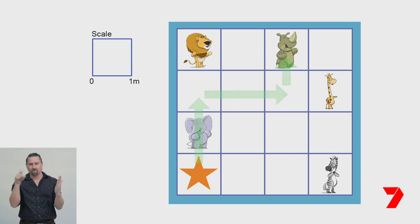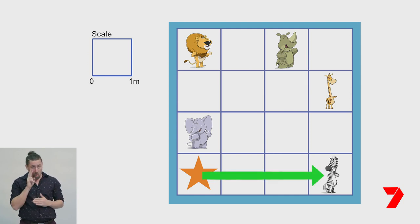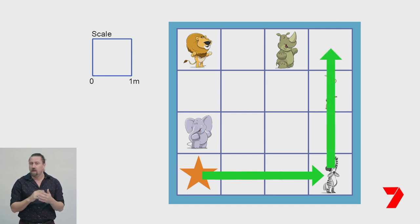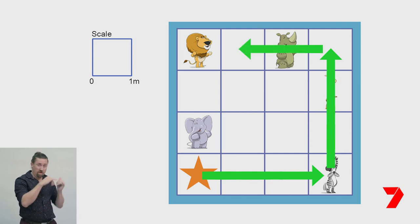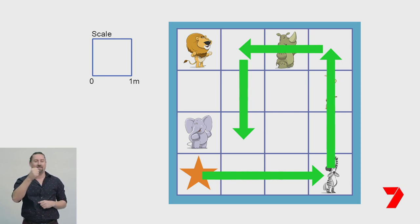Let's try another. Start at the star. Move three metres east. Turn to face north and go forward three metres. Now move two metres west. Turn to the south and move forward two metres. What animal is one metre to your right? The elephant. If you got a bit lost, remember that the elephant is on your right because you are facing towards the bottom of the game board.